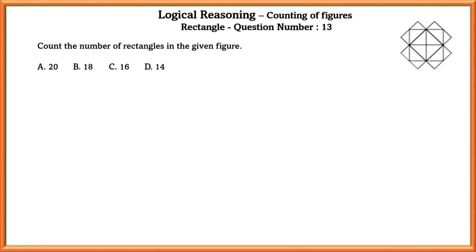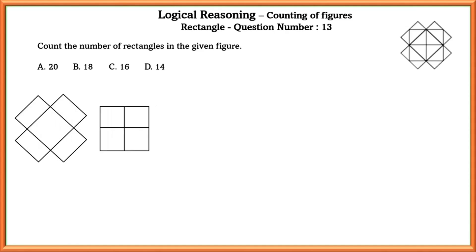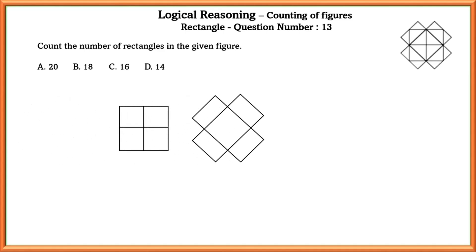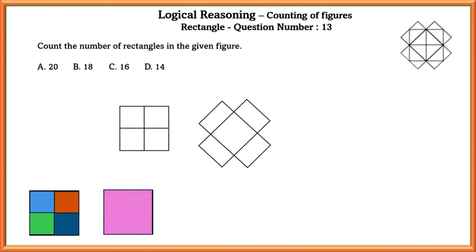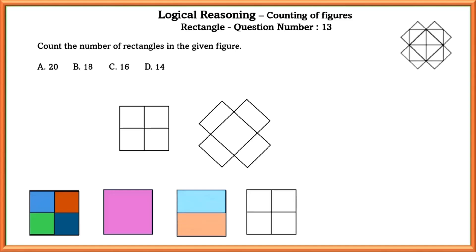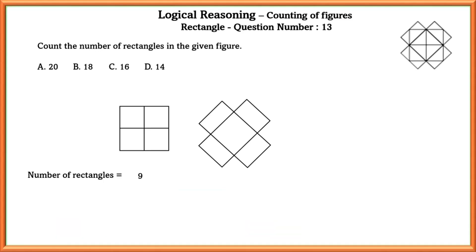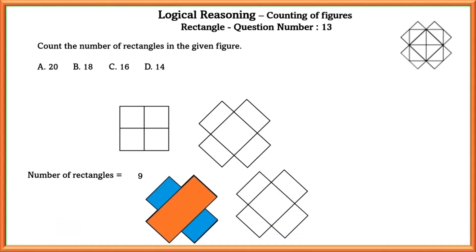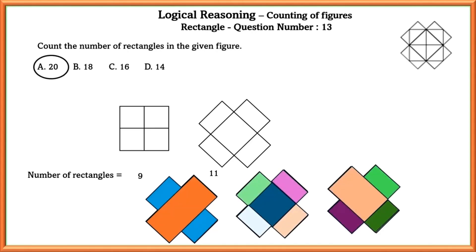Logical reasoning counting of figures — rectangles. Question number thirteen: count the number of rectangles in the given figure. Every square is a rectangle, but not every rectangle is a square, so we take squares into consideration as well. We get one-unit: 4 squares and two-units: 1 square. Looking vertically we get 2 rectangles, and horizontally another 2. Total rectangles for the first figure: 9. In the second figure, similarly, we get 11. Adding them gives 20 as the answer.